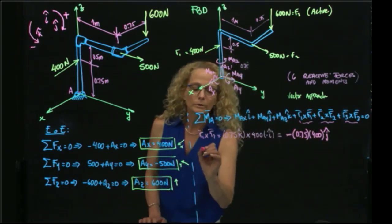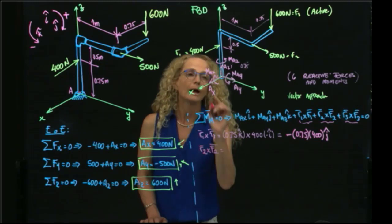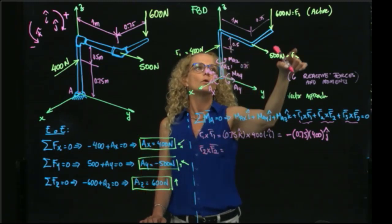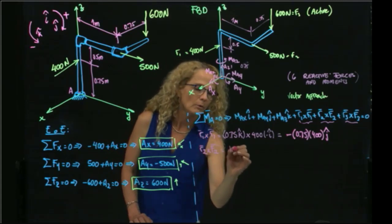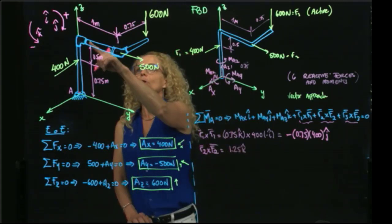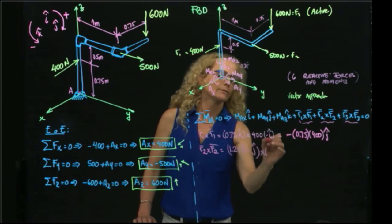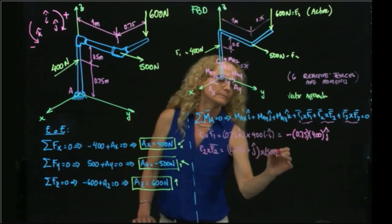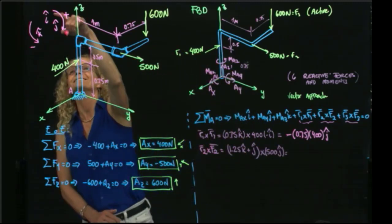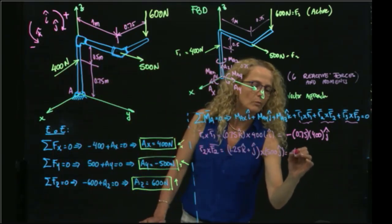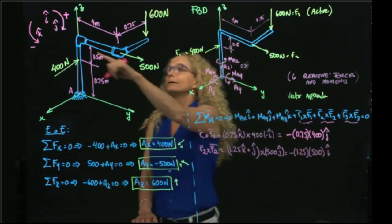Now R2 cross F2. R2, the position vector of force F2, is 1.25K plus 1J, crossed with 500J. K cross J is negative I, so we get negative 1.25 times 500 in the I direction. J cross J equals zero. So that is the result of the second cross product.